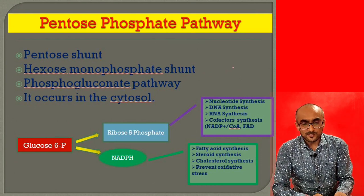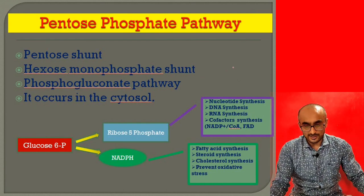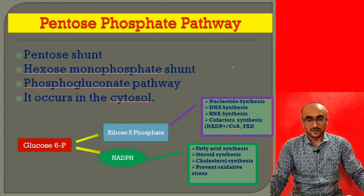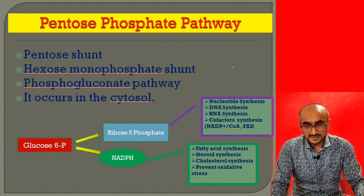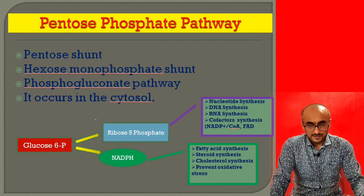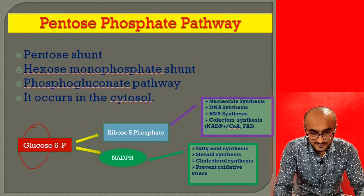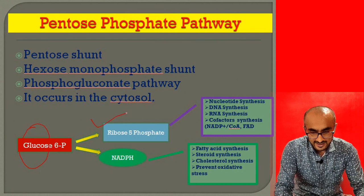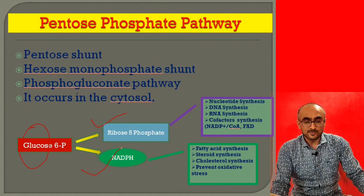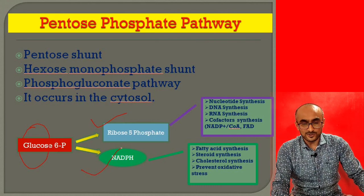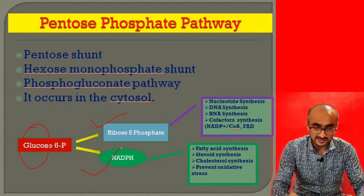The pentose phosphate pathway is also called the pentose shunt, hexose monophosphate shunt, or phosphogluconate pathway. It occurs in the cytosol. In this pathway, glucose-6-phosphate is converted into ribose-5-phosphate and NADPH. NADPH is nicotinamide adenine dinucleotide phosphate in its reduced form, and these are the two major products of glucose-6-phosphate in this pathway.